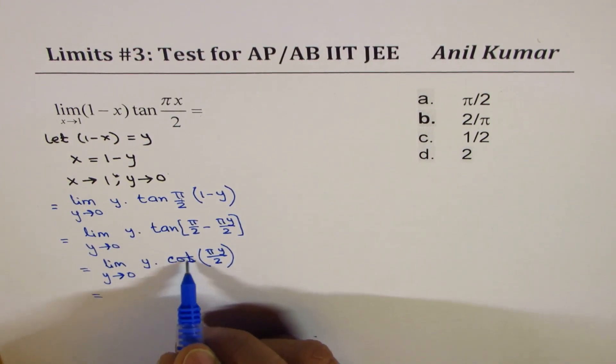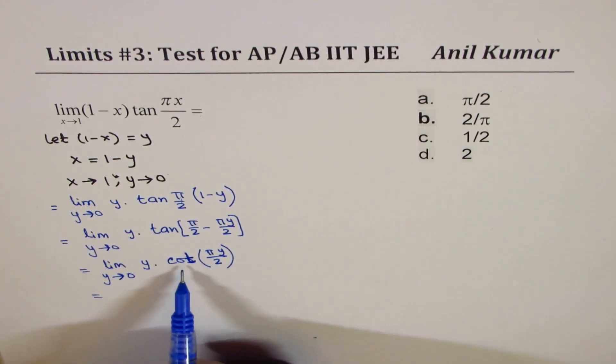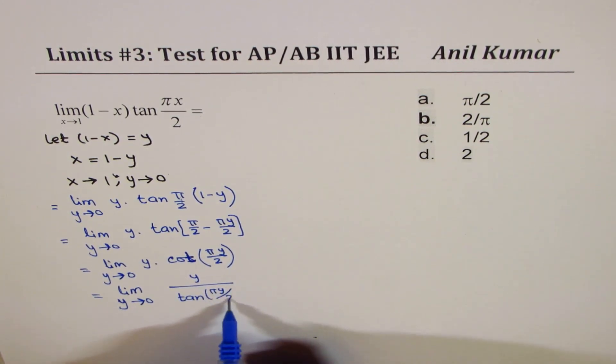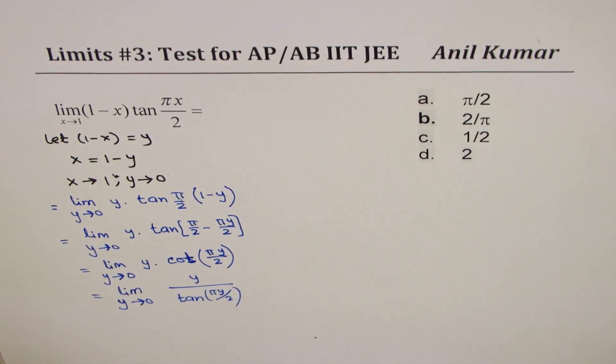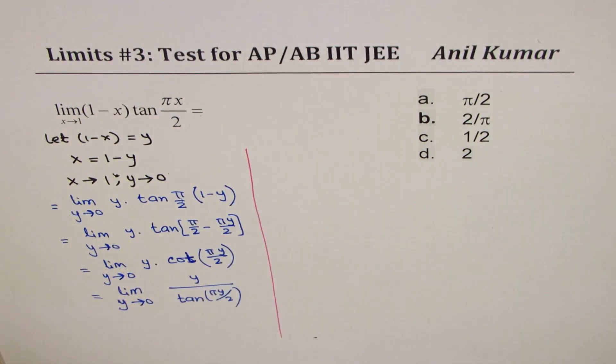Cot could be written as reciprocal of tan, so I could rewrite this as limit y approaches 0, y over tan pi y by 2.